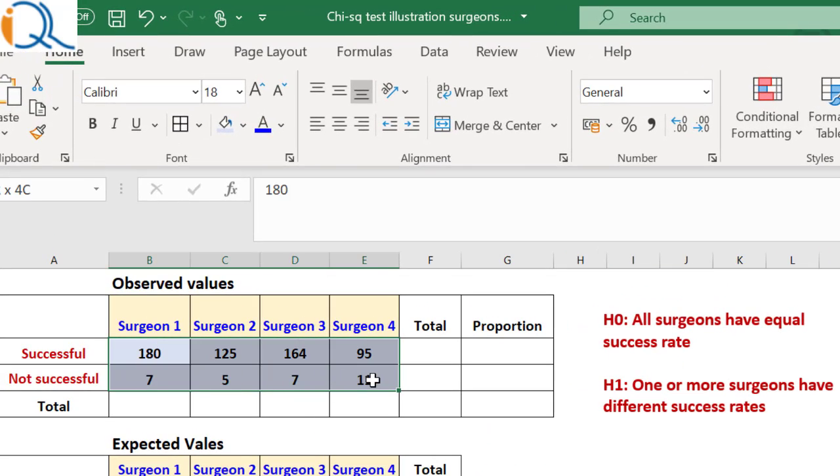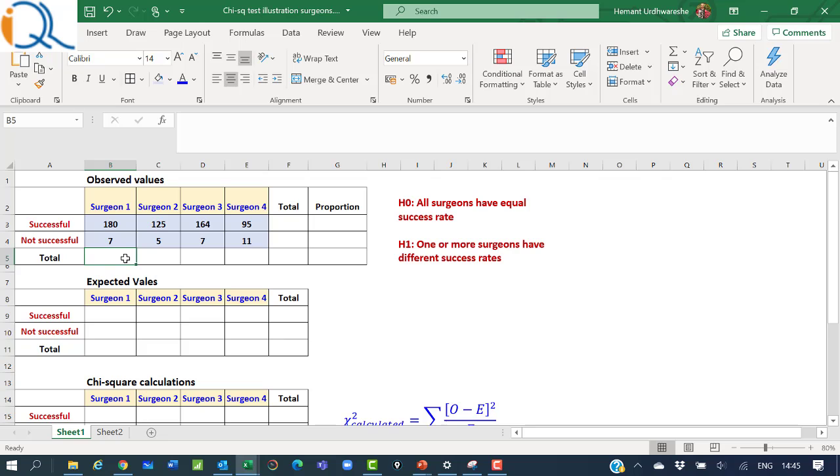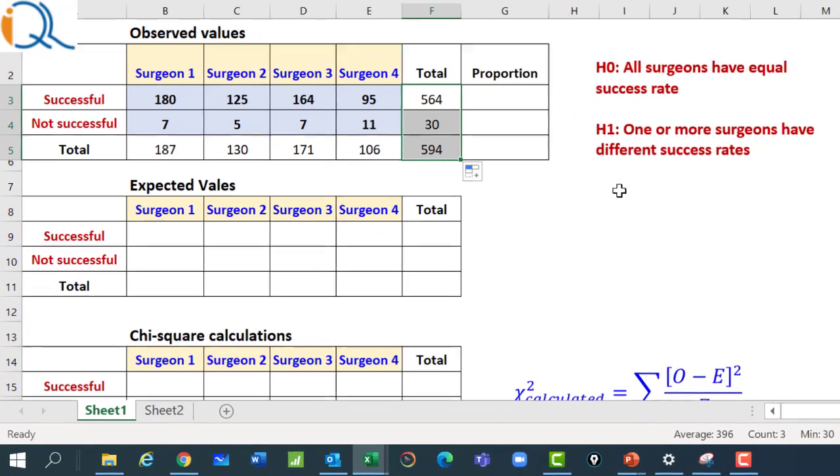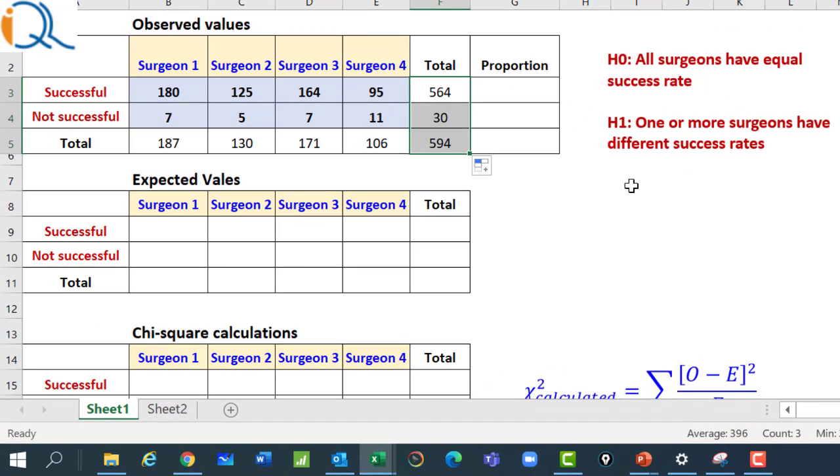Let us now see how to solve this problem on Microsoft Excel. The observed data is shown in blue color. The first row shows number of successful operations by the four surgeons, and the second row shows number of operations which were not successful. First, we will take the row totals and the column totals. The column totals can be taken just by clicking the sigma sign and copying that value. These are the column totals. And similarly, we can also take the row totals. The total number of operations were 594, out of which 564 were successful.